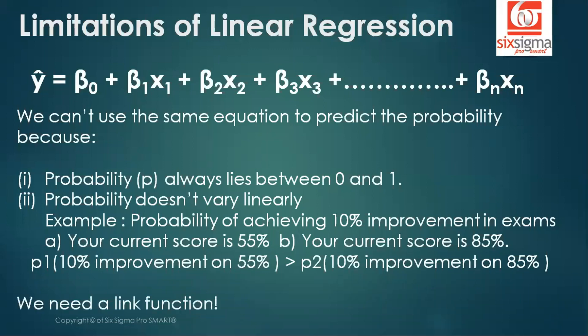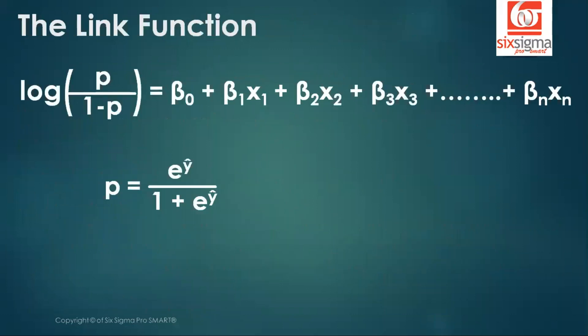Therefore, we need a link function that helps us overcome these two limitations of linear regression. And the solution comes in the form of a logit function, as you can see on the left hand side in the first equation, where p is the desired probability that we are trying to estimate. And one minus p is the complementary event probability of success divided by the probability of failure, you can say. So if we solve for it, we get the value of probability as e raised to the power of y hat divided by 1 plus e raised to the power of y hat. This is nothing but the sigmoid function.